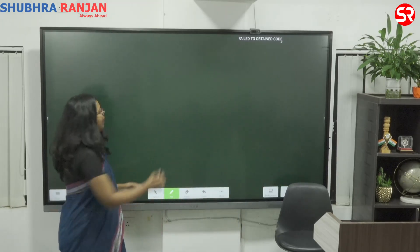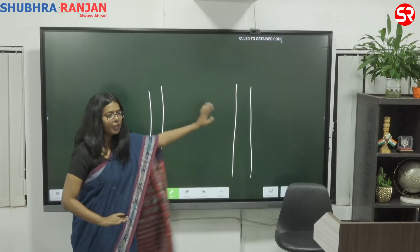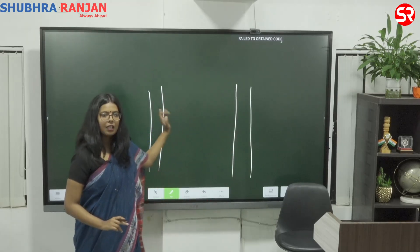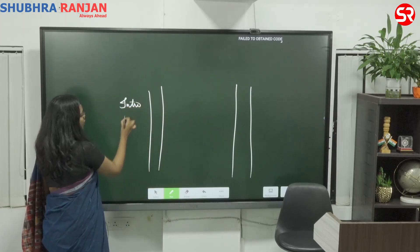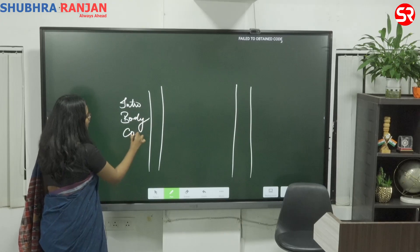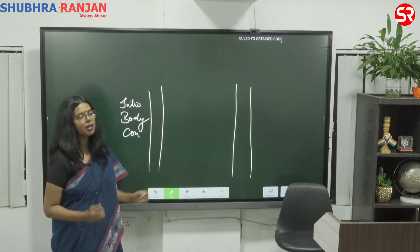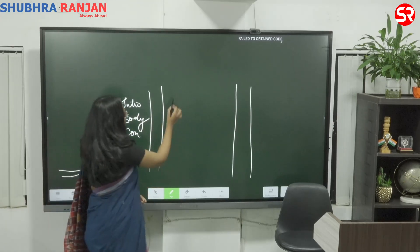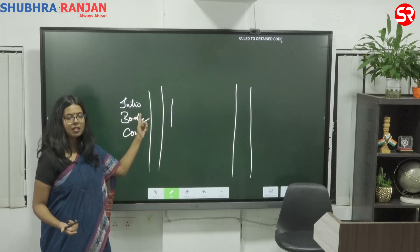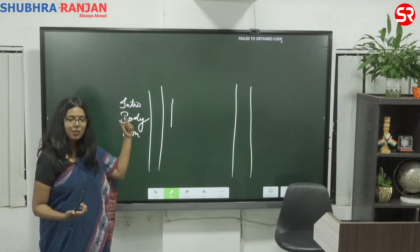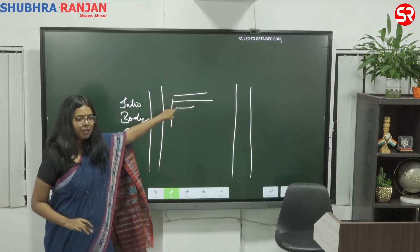Coming to the way we write an answer — you have to leave the margin and not write on it. When writing an answer, there are three parts: introduction, body, and conclusion. These three things should be in every answer. When writing an introduction, students often write a whole paragraph, but that is not what you have to do. It should be very crisp — maximum three lines.